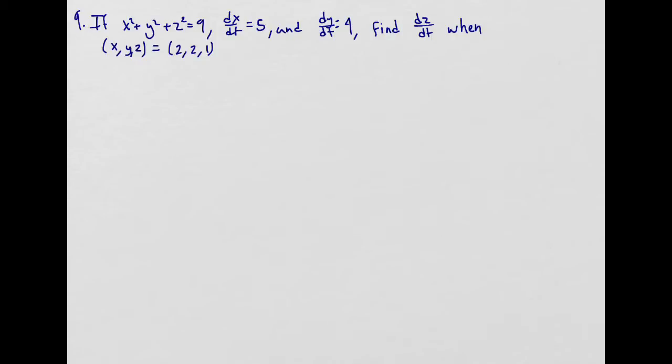Okay guys, in this video I'm going to do another related rates problem. The question says if x squared plus y squared plus z squared equals 9, dx/dt equals 5, and dy/dt equals 4, find dz/dt.